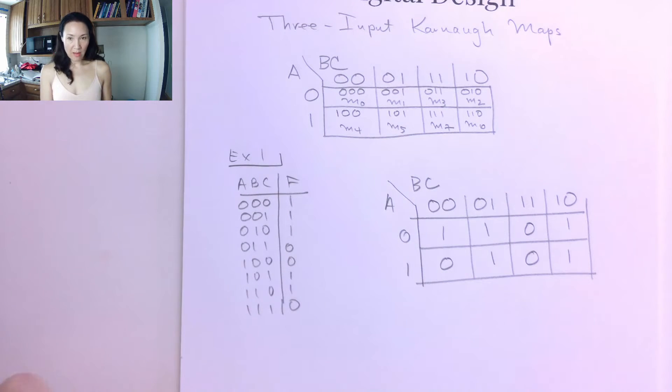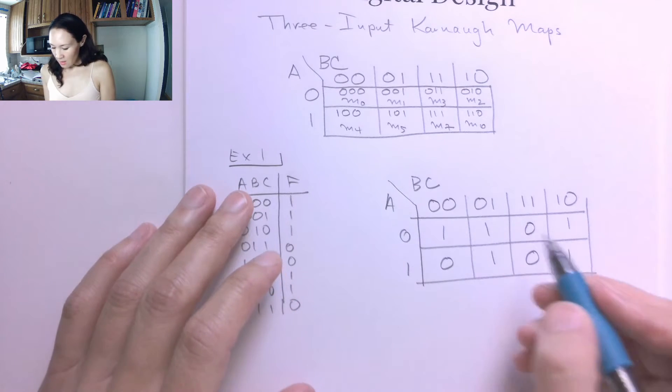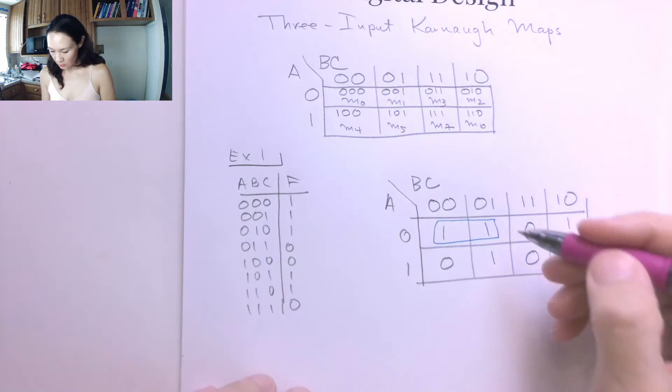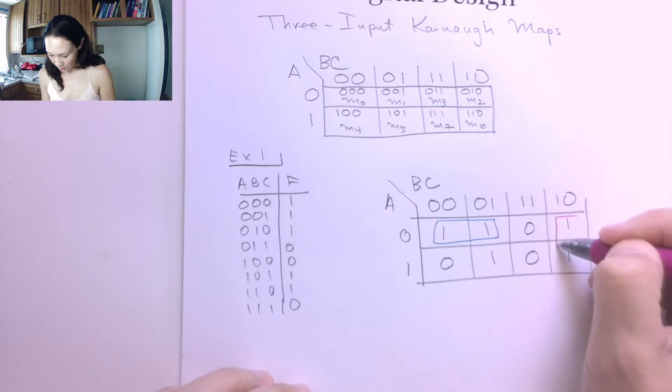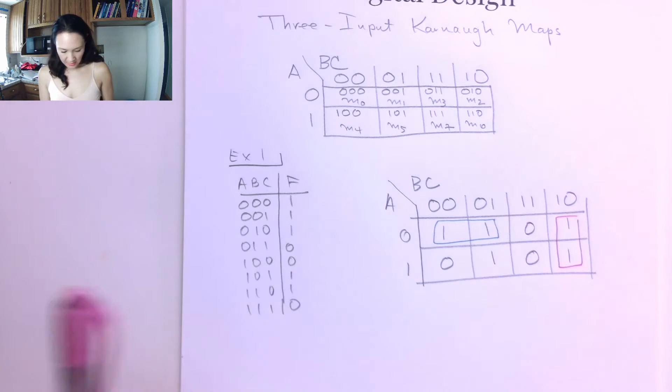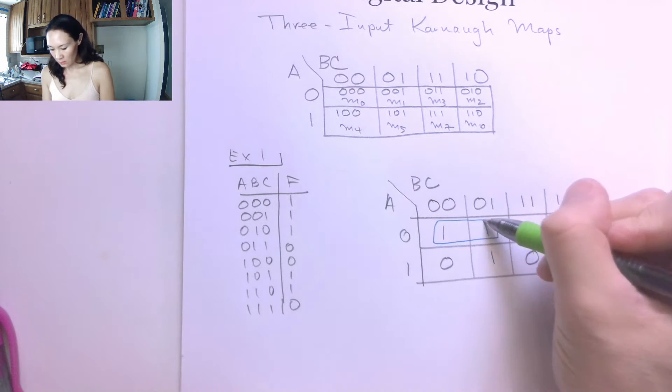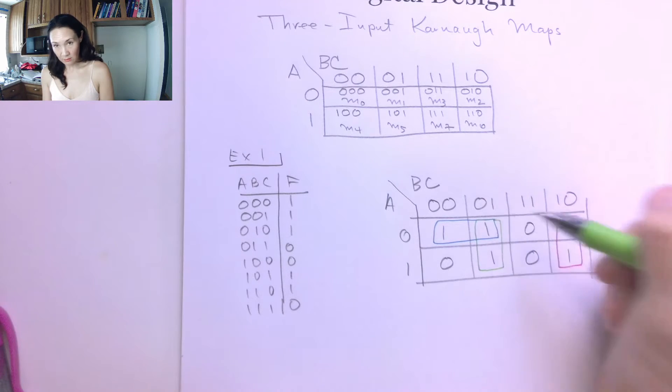Now I'm going to make my groupings. So I'll do these in different colors so you can see. I have a group of two here. I have another group of two here. And then I have this kind of extra one here that's not grouped.